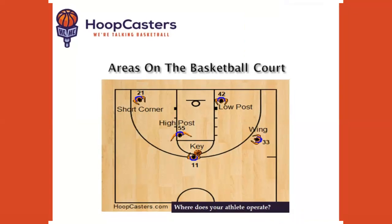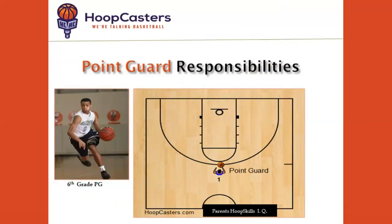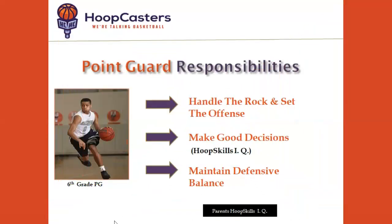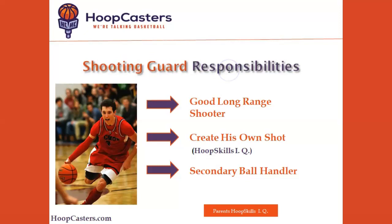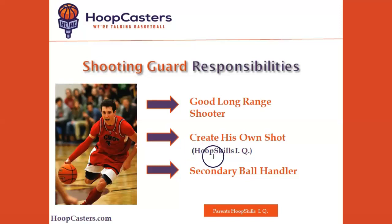We want you to recognize these areas mainly so you can enjoy the game more and understand what the coach is talking about. After you're comfortable with basic positions and areas on the court, we'll move into the responsibilities of those positions. For example, the point guard's responsibility is to handle the rock and set the offense — he has to make good decisions with the ball. Shooting guards have to be good long-range shooters, create their own shot, and serve as the secondary ball handler.